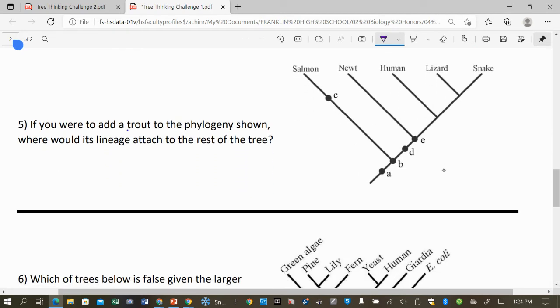If you were to add a trout, which is a fish, to the phylogeny shown, where would its lineage attach? And so there's probably more than one right answer here. Here's a snake and a lizard, these are both reptiles, which you may or may not know. A human is a mammal, and then a newt is an amphibian, and then a salmon is a fish. So I would probably put it right here, the trout, because it's more closely related to the fish, the other fish than everybody else.